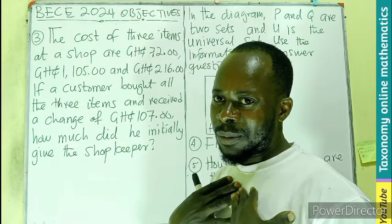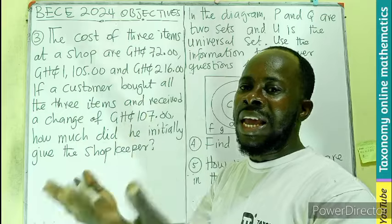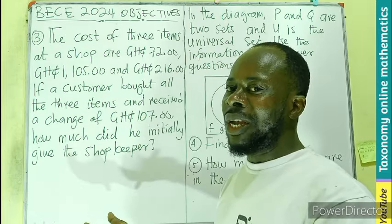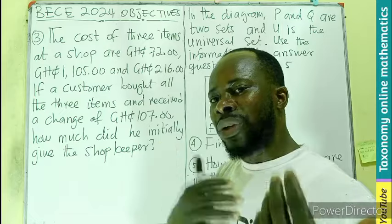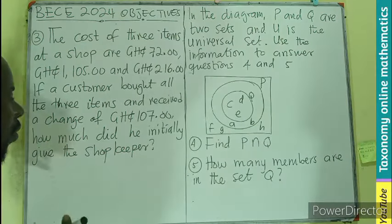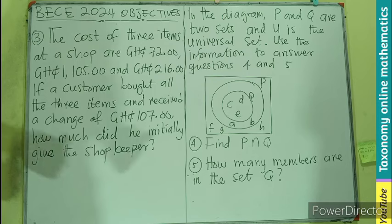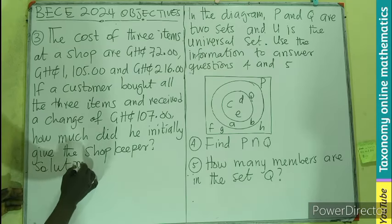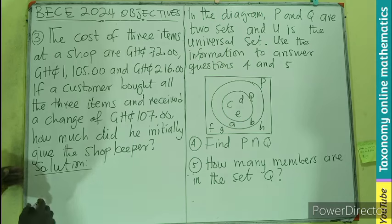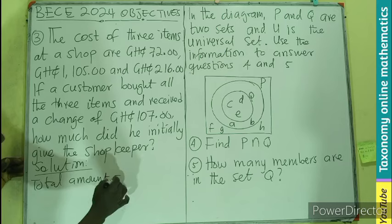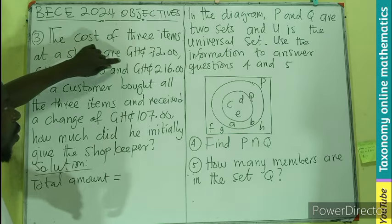If I have 10 cedis and I buy something for 6 cedis, I'll be given 4 cedis change. If I want to know how much I gave out, the cost of the item (6 cedis) plus the change altogether gives me the total money. So let's do that. We are just going to add all of them together. So the solution: total amount is going to be the addition of all.